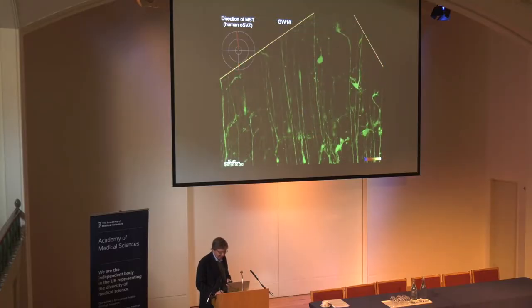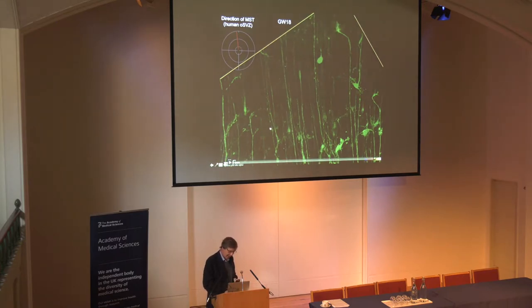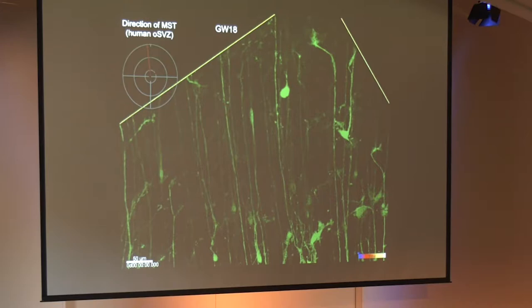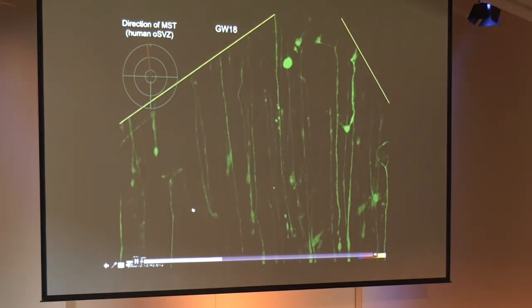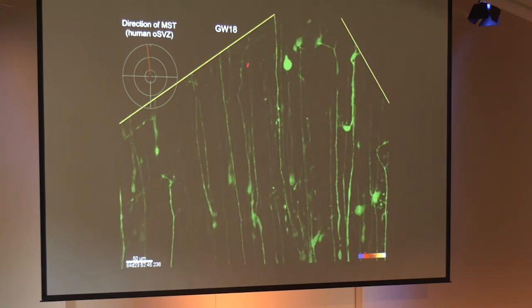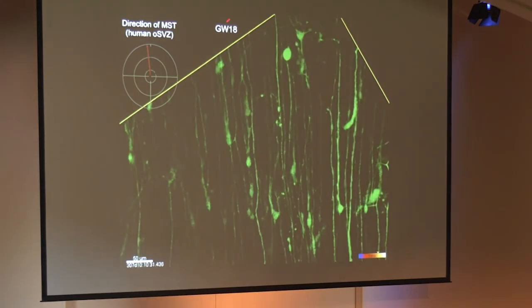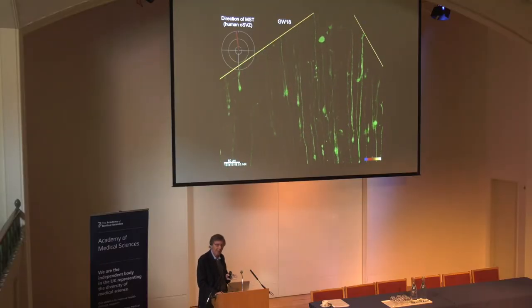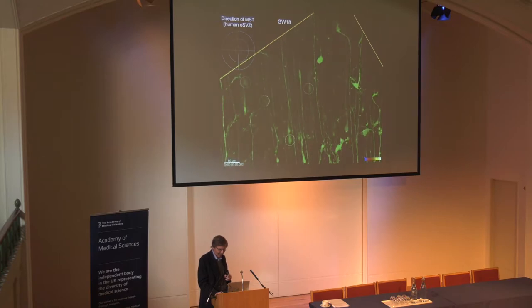One of the things we've been able to do at UCSF is actually image these cells in living cell slices. These are slice cultures where we've labeled a virus that is only expressed in the progenitor population. The cells that are labeled are the progenitors. Over a period of 48 hours, most of them are both dividing and migrating. They're highly radial, moving up toward the cortical plate where the neurons are layering up. But these cells and their behavior are really very unique, and I want to spend the next few slides describing those unique features.